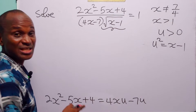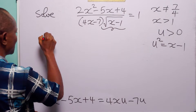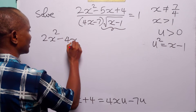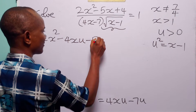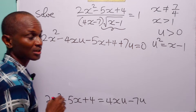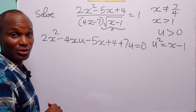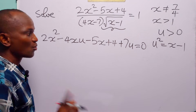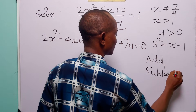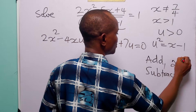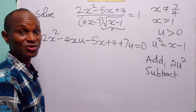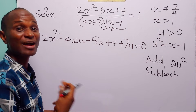Let us move these two terms over to the left-hand side. When we do that, we have 2x squared minus 4xu minus 5x plus 4 plus 7u is equal to 0. The next thing we are going to do is complete the square. We are going to add and subtract 2u squared to the left side of this equation. When we add and subtract the same quantity to one side of an equation, we haven't changed the equation.